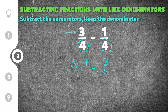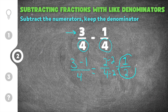And then you keep the denominator of 4. Now we check to see if we can reduce this. We have 2 fourths — both are even numbers, which means the number 2 can go into both the numerator and the denominator. When we reduce, we do 2 divided by 2, so we get 1 in the numerator. And then 4 divided by 2, so we get 2 in the denominator. So our final solution after reducing is 1 half. So 3 fourths minus 1 fourth is 2 fourths, which reduces to 1 half.